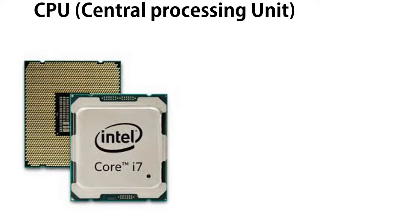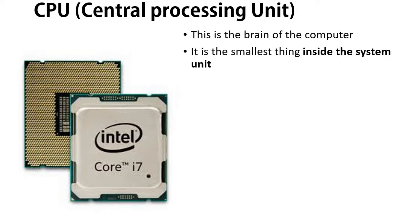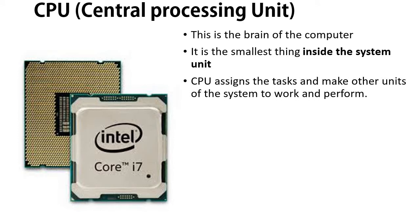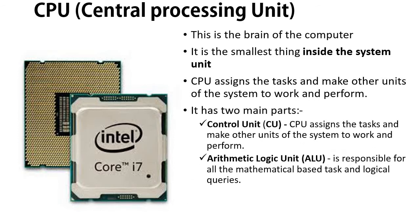What is a CPU? CPU in full is known as central processing unit. It is the smallest device in a computer, with several pins. It's always known as the brain of the computer — the smallest thing inside the computer but does a lot of work. The CPU assigns tasks and makes other units of the system work and perform. It has two main parts: the control unit and the arithmetic logic unit. The control unit assigns tasks and makes other units of the system work, while the arithmetic logic unit is responsible for mathematical operations and logical queries.